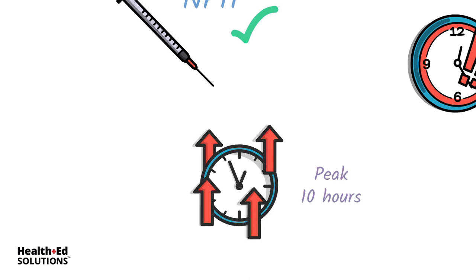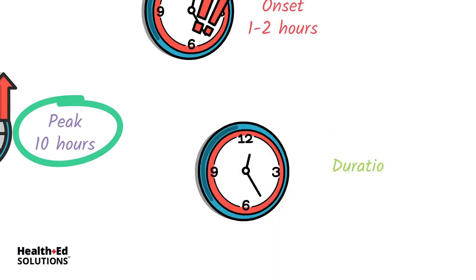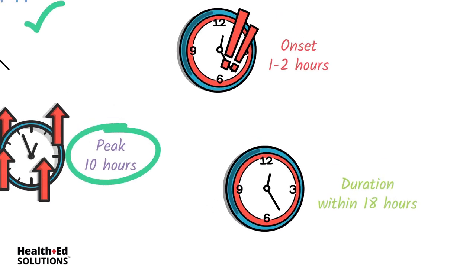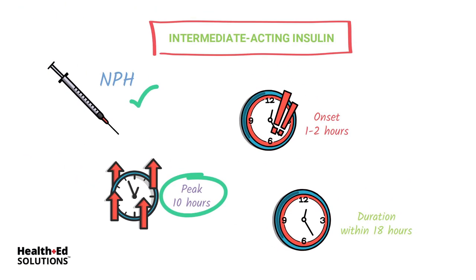Some sources will say eight to fourteen hours for the peak, but as an approximation: within about 10 hours of receiving NPH insulin, it is at its peak working power. The duration is within about 18 hours, so this insulin hangs around for quite some time — 18 hours.